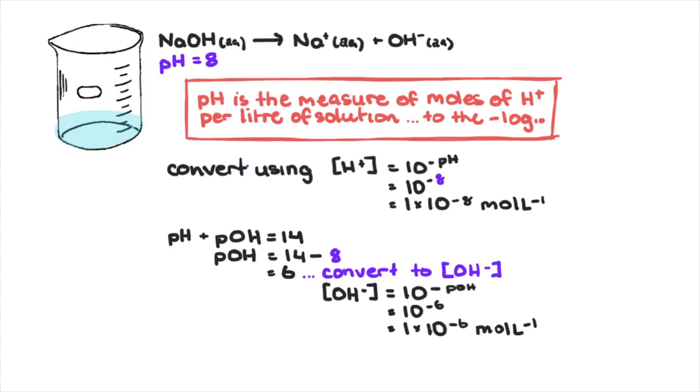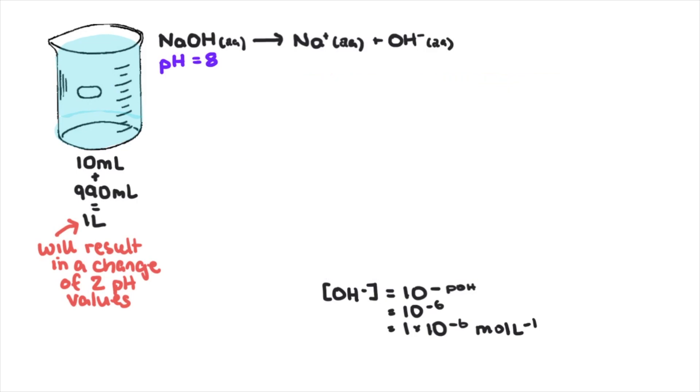Diluting a 10 mL volume of this strong base, for example sodium hydroxide, to make up 1 liter will be a change of two pH values. But which way? We'll use math to solve this issue.